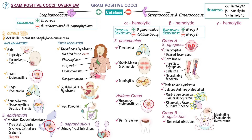Adult group B streptococcus infections can manifest similarly, including bacteremia, pneumonia, and bone, joint, and soft tissue infections.